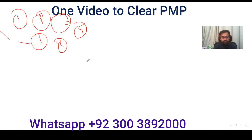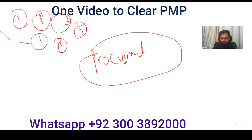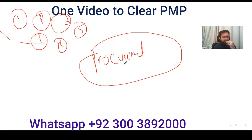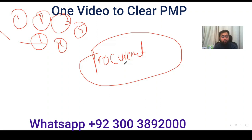Procurement is mostly done through predictive methods even in agile. In procurement: decide make-or-buy, identify potential sellers, make evaluation criteria and statement of work, advertise what you need, receive proposals, select the best seller, sign the agreement, conduct inspection and audit, and then close the procurement when complete. Finally, you are also checking quality standards and adhering to quality throughout the project.